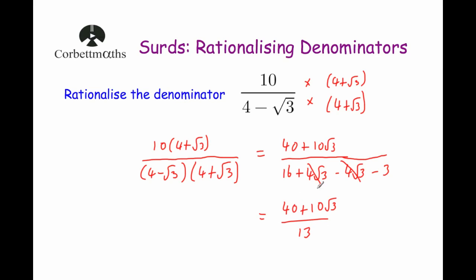Whenever you get to this point, I look to see if I can cancel things down. We've got 13 on the denominator, and 40 is not a multiple of 13, so things aren't going to cancel down nicely. So you just leave it like that. The answer to 'rationalize the denominator of 10 over 4 subtract root 3' is 40 plus 10 root 3 over 13. We don't have any surds on the bottom line — we achieved that by multiplying both numerator and denominator by the conjugate of the denominator: the same expression but with the opposite sign.